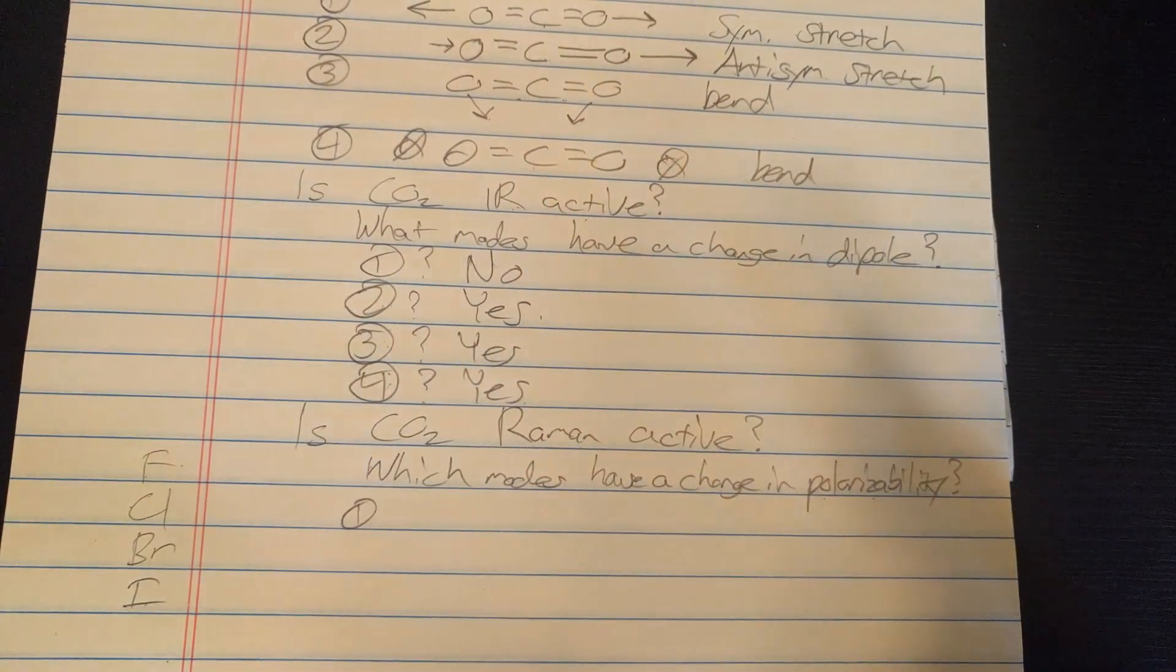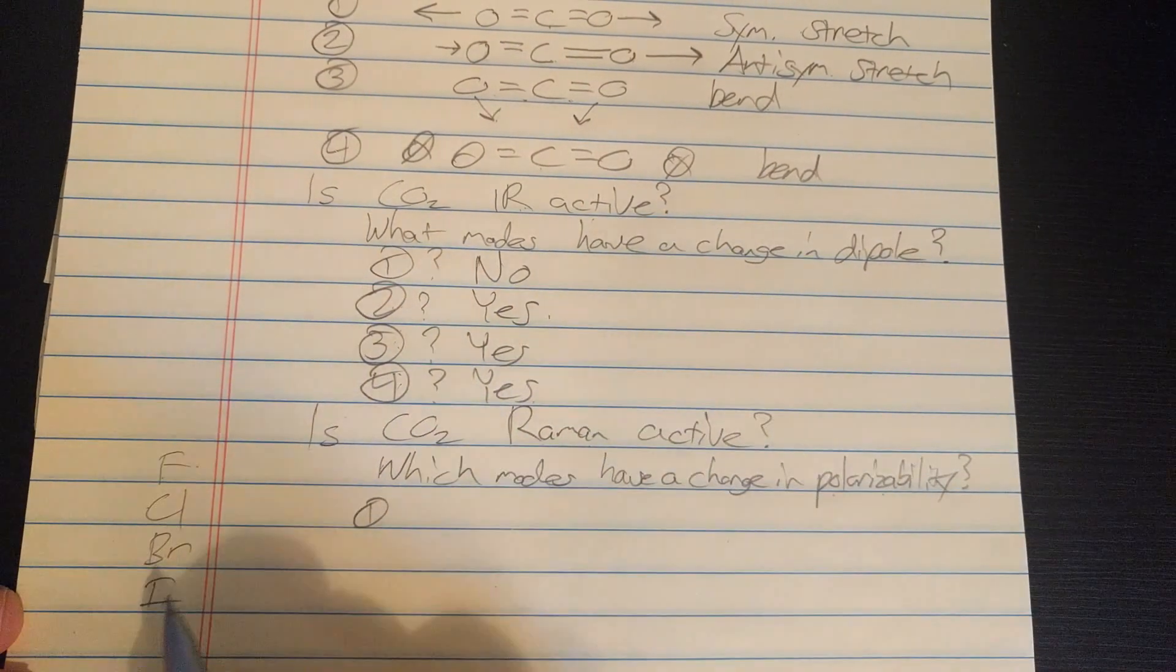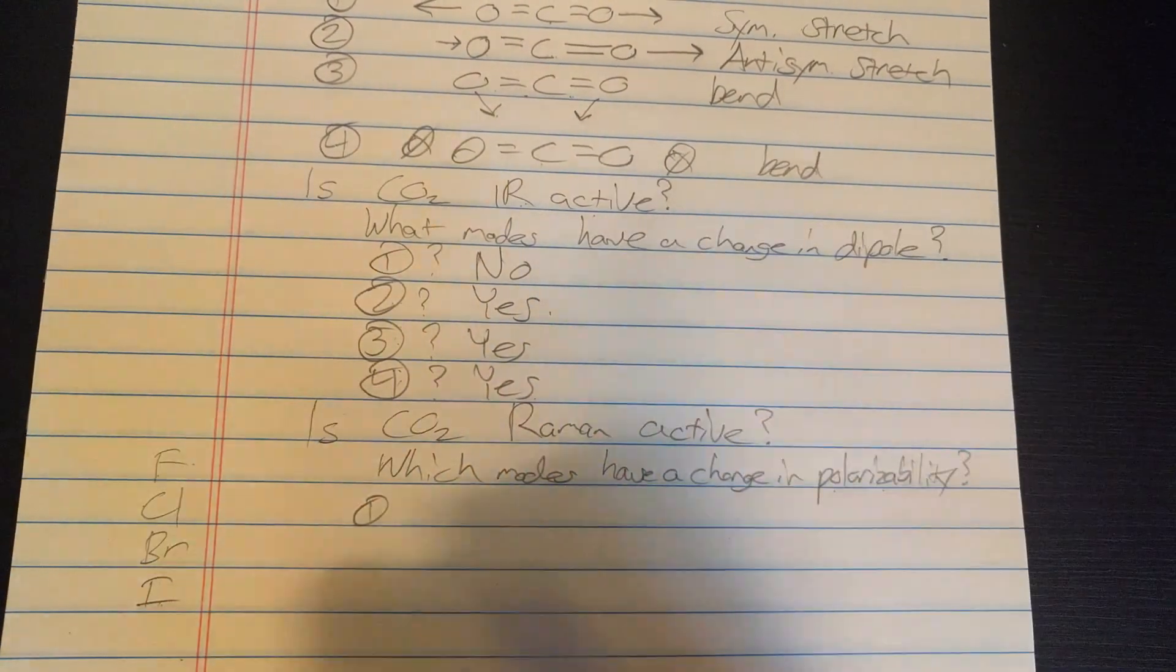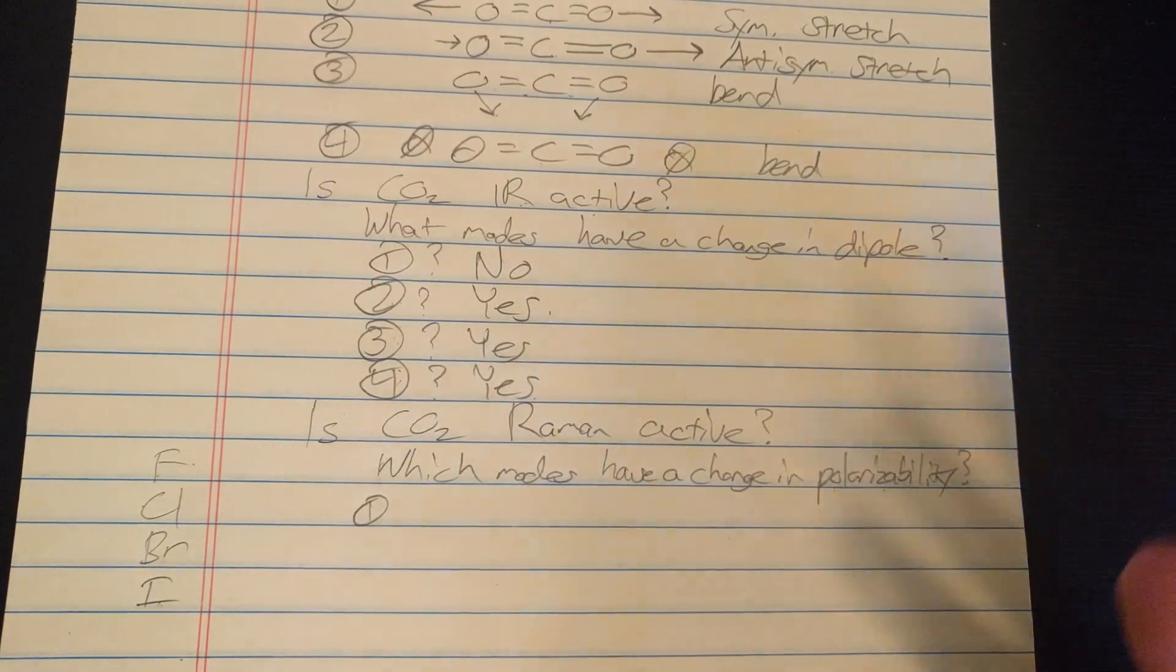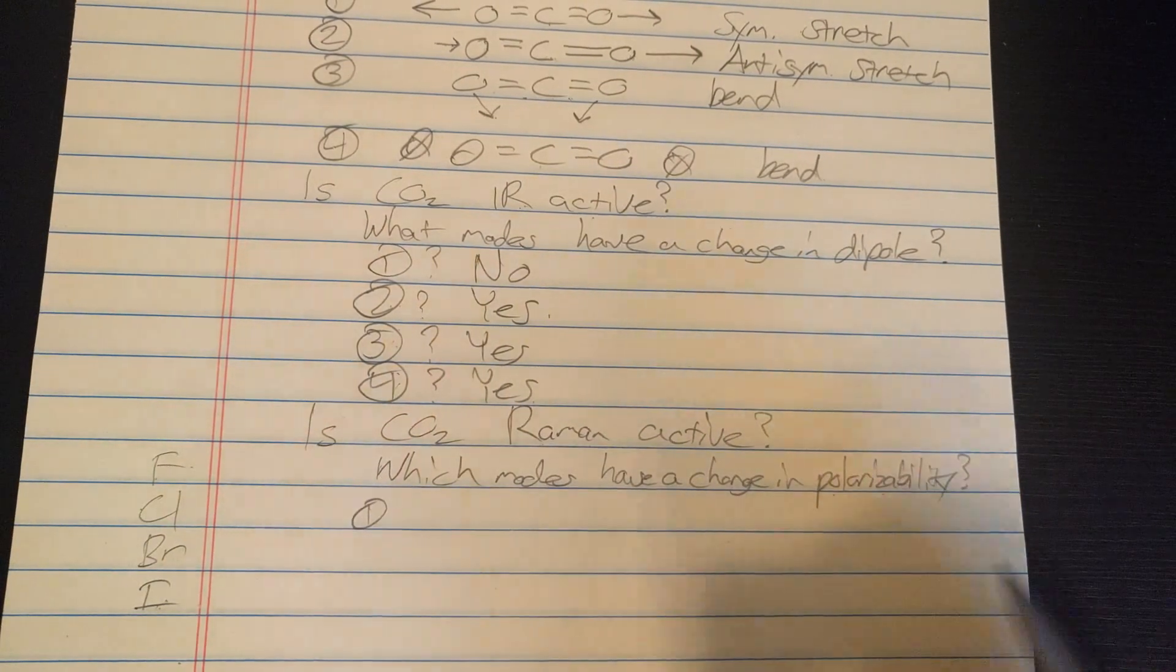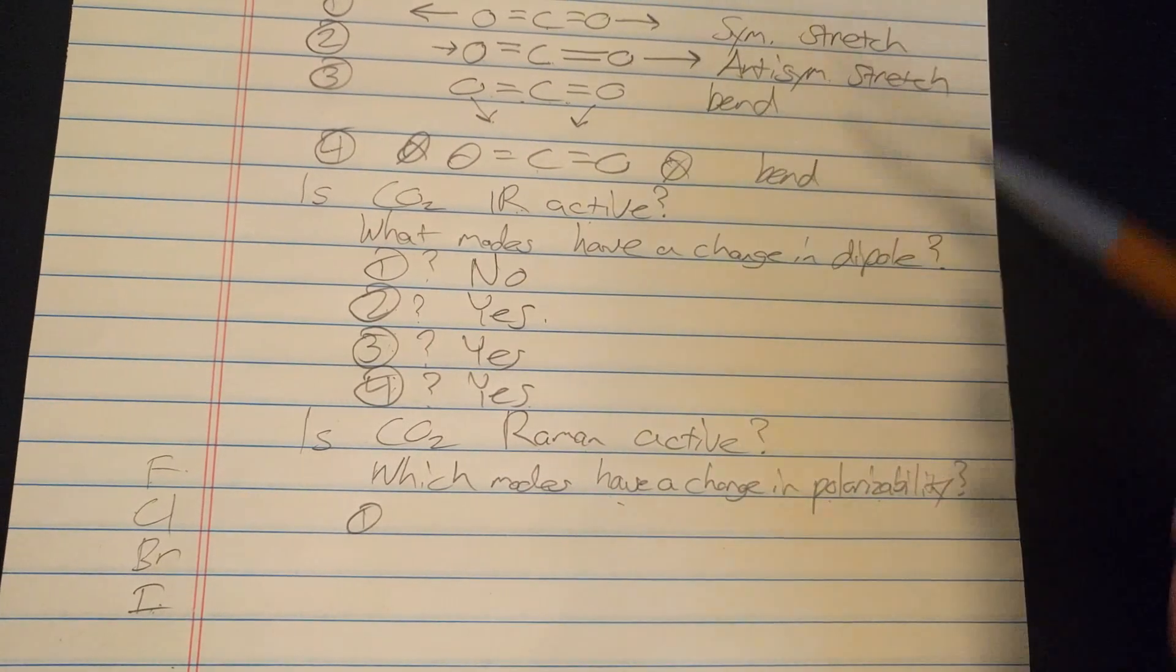Iodine is a very big molecule and the electrons are very far from the nucleus. So it's easy to pull the electrons away from the nucleus in iodine. So therefore iodine is much more polarizable than fluorine. So it's kind of an analogy with CO2 here.